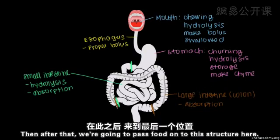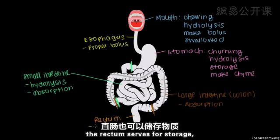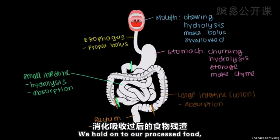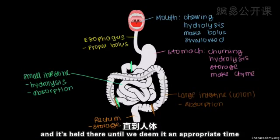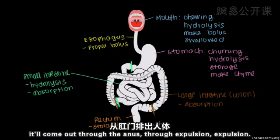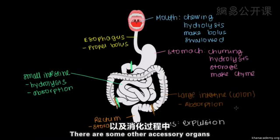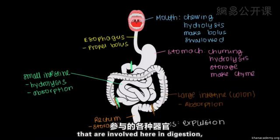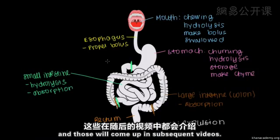After the large intestine, food passes on to the rectum. Kind of like the stomach of the GI tract, the rectum serves for storage — we hold onto our processed food until we deem it an appropriate time to expel it. When it's time, it'll come out through the anus through expulsion. Those are all the key components of our gastrointestinal tract. There are also accessory organs involved in digestion — including the liver, the gallbladder, and the pancreas — and those will come up in subsequent videos.